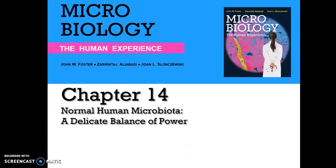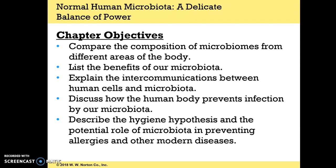We're going to cover Chapter 14, Normal Human Microbiota: A Delicate Balance of Power. We want to compare the composition of microbiomes from different areas of the body, list the benefits of the microbiota, explain the inner communications between human cells and microbiota, discuss how the human body prevents infection by our microbiota, describe the hygiene hypothesis, and the potential role of microbiota in preventing allergies and other modern diseases.